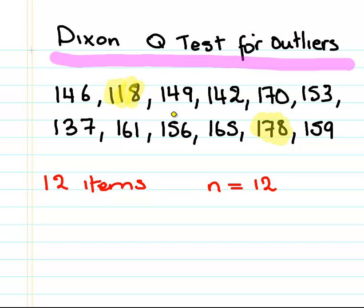But it could potentially be 178 as well. So essentially what we might be interested in is the gap between that number and the next number. So the second highest number is 170, that's not the outlier. But 118 to the next lowest number, 137, that's a bit of a distance. So we're interested in the gap between the number and the next number here.